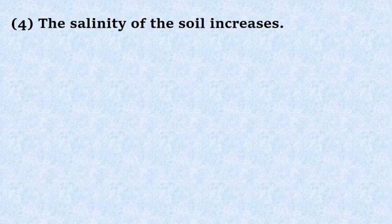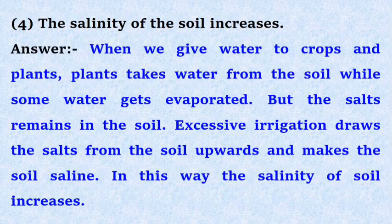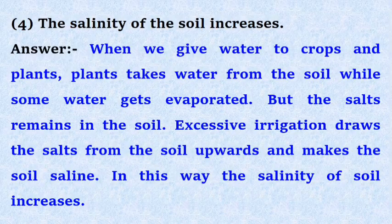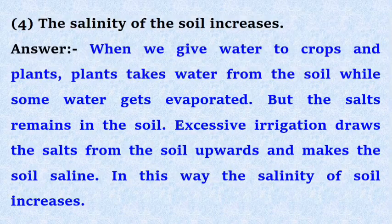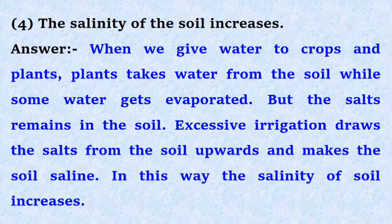Fourth, the salinity of the soil increases. Answer: When we give water to crops and plants, plants take water from the soil while some water gets evaporated. But the salts remain in the soil. Excessive irrigation draws the salts from the soil upwards and makes the soil saline. In this way, the salinity of soil increases.